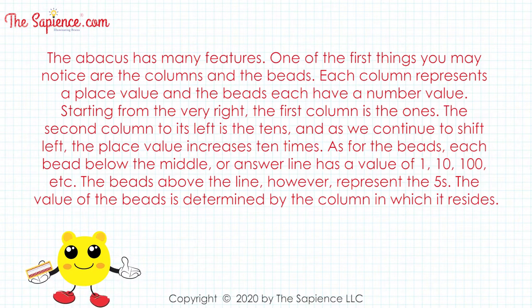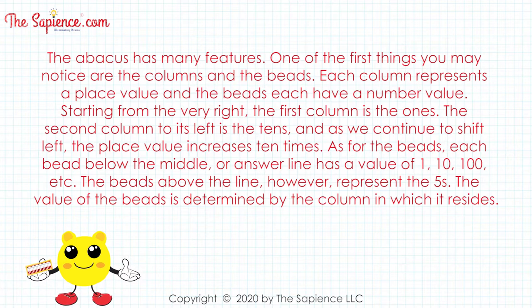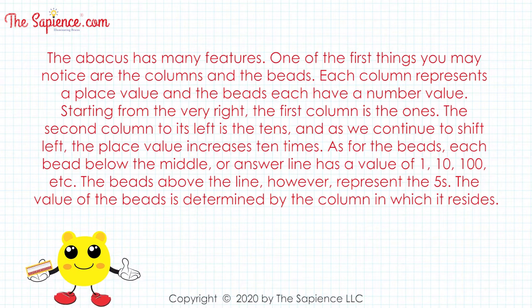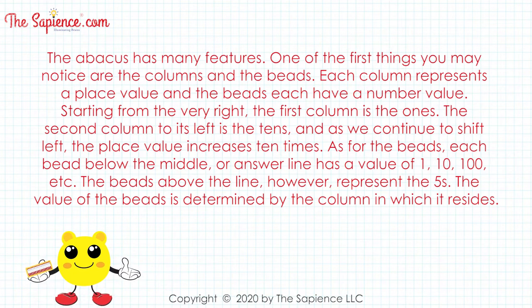Starting from the very right, the first column is the ones. The second column to its left is the tens, and as we continue to shift left, the place value increases ten times.